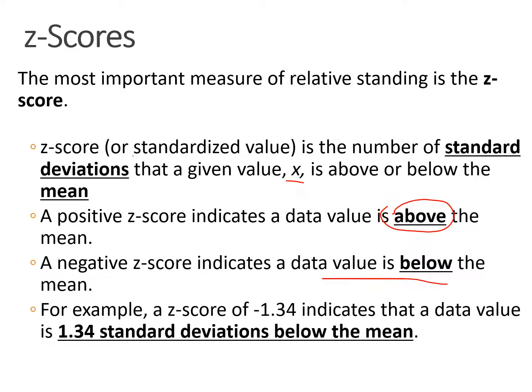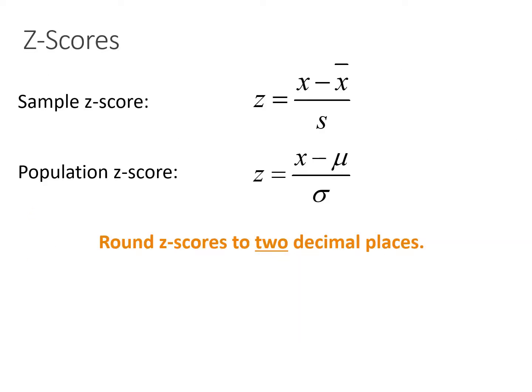Z-scores are also called standardized values. For example, if a data value has a z-score of negative 1.34, that means that particular data element is 1.34 standard deviations below the mean. Calculating a z-score is simple: we take the data value, subtract the mean, and then divide by the standard deviation. We have the same equation using the notation for a sample instead of a population.